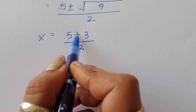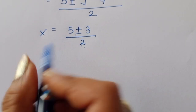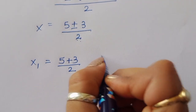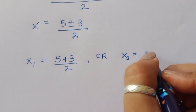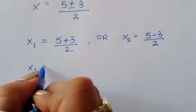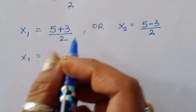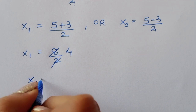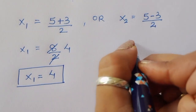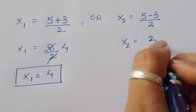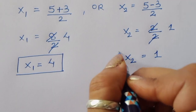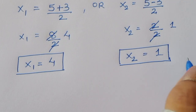We get two values: x₁ = (5 + 3)/2 = 8/2 = 4, and x₂ = (5 - 3)/2 = 2/2 = 1. Now we need to verify which value is correct.